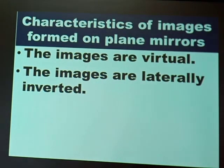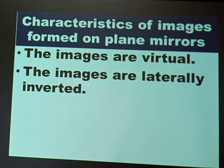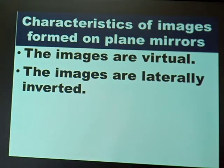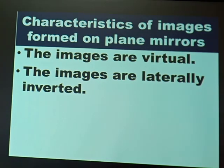The second characteristic: the images are laterally inverted. What does it mean to be laterally inverted? It means that the image has reverse sides to those of the object. If you look at yourself in a mirror, you will discover that where you are facing is not where the image is facing — you cannot see your back through a mirror because the image faces the opposite direction. That is why we say images are laterally inverted.